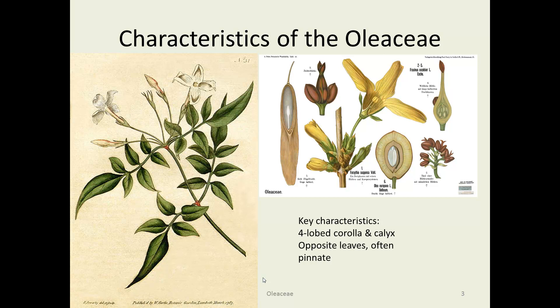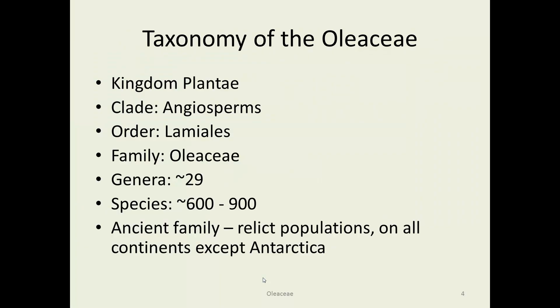Here are a couple of drawings demonstrating the main characters of this family. The biggest thing to look for would be that four-lobed corolla, and also, if there are fused sepals below, a four-lobed calyx. These often have pinnate leaves that are opposite. On the left you can see a drawing of jasmine, and on the right, olive. These are in the Lamiales. We've seen this family before with the Lamiaceae. About 29 genera and at most 900 species, so not a really large family.